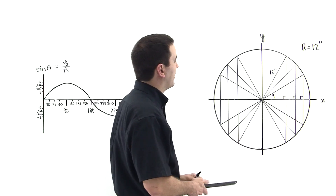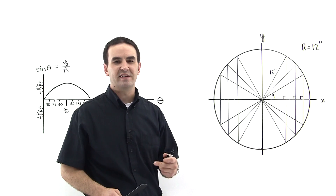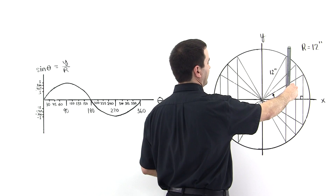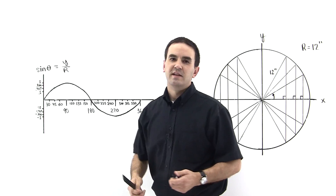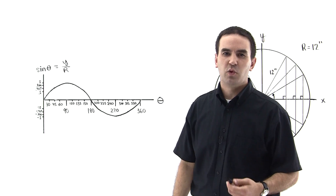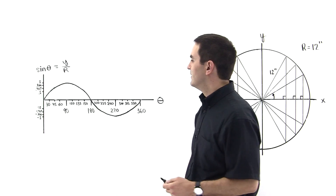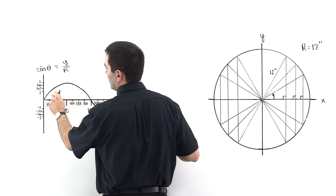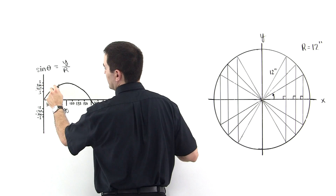We take a look at the triangle corresponding to 60 degrees. We measure the height and get 10.39 inches. 10.39 divided by 12 is equal to 0.866. So we come out to 60 degrees, come up to the graph, and lo and behold, 0.866 is right there.